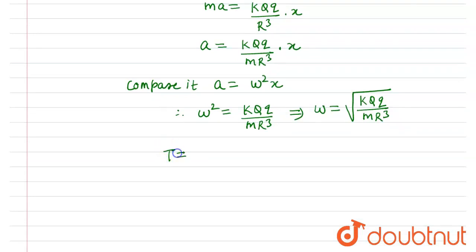The time period T equals 2π/ω equals 2π times the square root of mR³ upon kQq. This is the time period of oscillation for this problem.